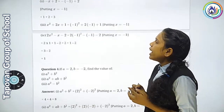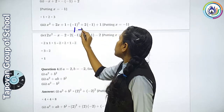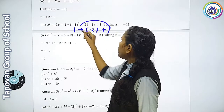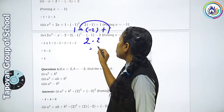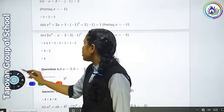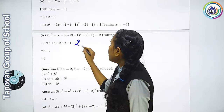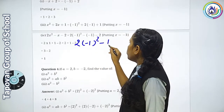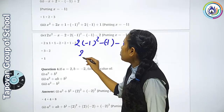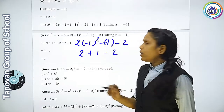Third number: x²+2x+1. x का square यानि (-1)²=1. 2×(-1)=minus 2. तो 1-2+1=0. Answer 0 आया। Fourth: 2x²-x-2. 2×(-1)²=2×1=2, minus(-1)=plus 1, minus 2. तो 2+1-2=1.